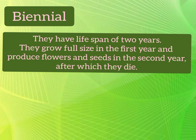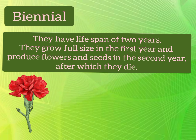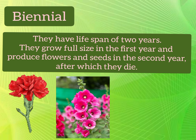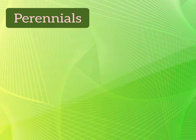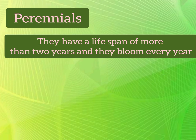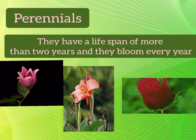Then biennials — they have a life span of two years. They grow to full size in the first year and produce flowers and seeds in the second year, after which they die. For example, carnation, holly oak and sweet william. Next, perennials — these have a life span of more than two years and they bloom every year. For example, lily, canna and rose.